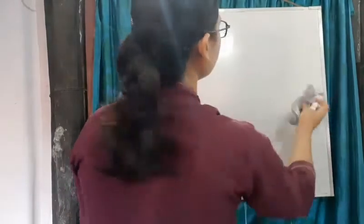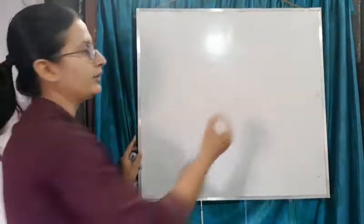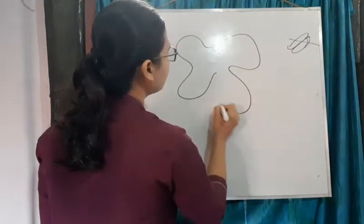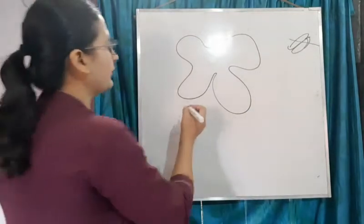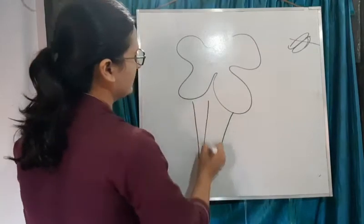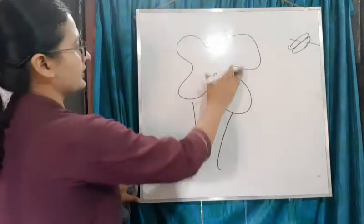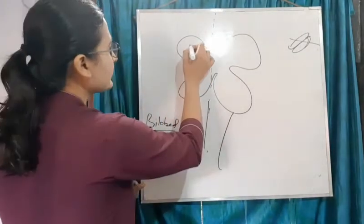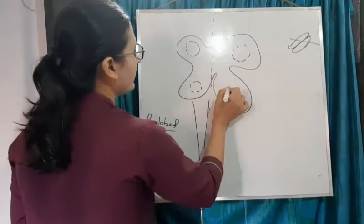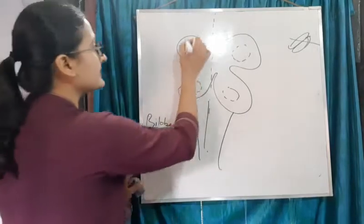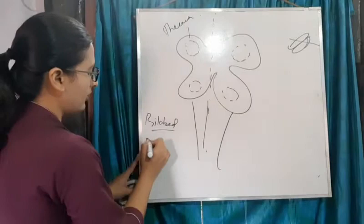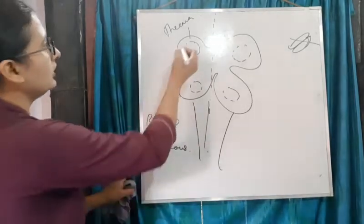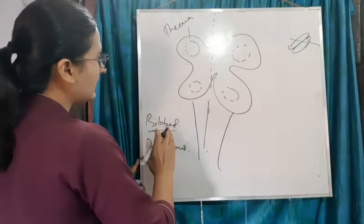When you cut the anther and view it under a microscope, it will look like this. It is bilobed. It has a cavity - in one lobe there are two cavities, and this cavity is called the theca. Therefore the anther is also called dithecous. The theca is a cup-like structure, and it is separated by a long groove.